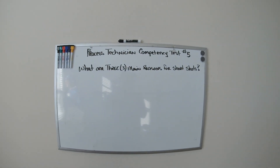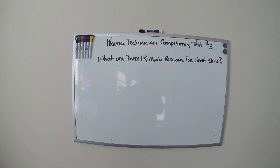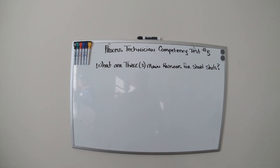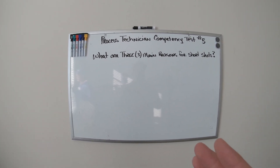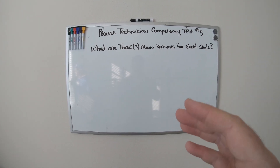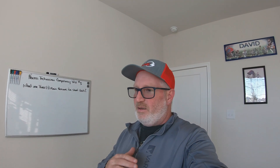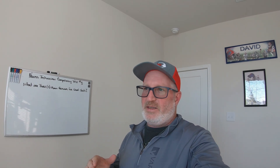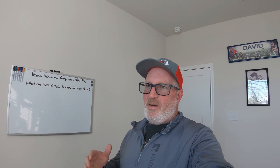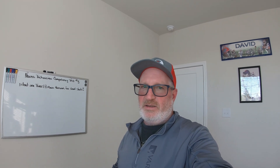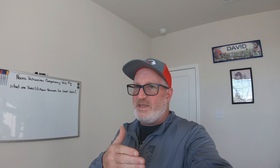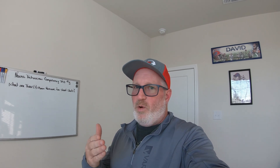Let's jump into Process Technician Competency Test number five: what are three main reasons for short shots? There could be a bunch of different ones, so write down in the comment section what you think the main reasons are. There's a long list — a lot of different things can happen. You could be running all day long and all of a sudden start running short shots. What makes it run short? What are some of the issues that can cause short shots?